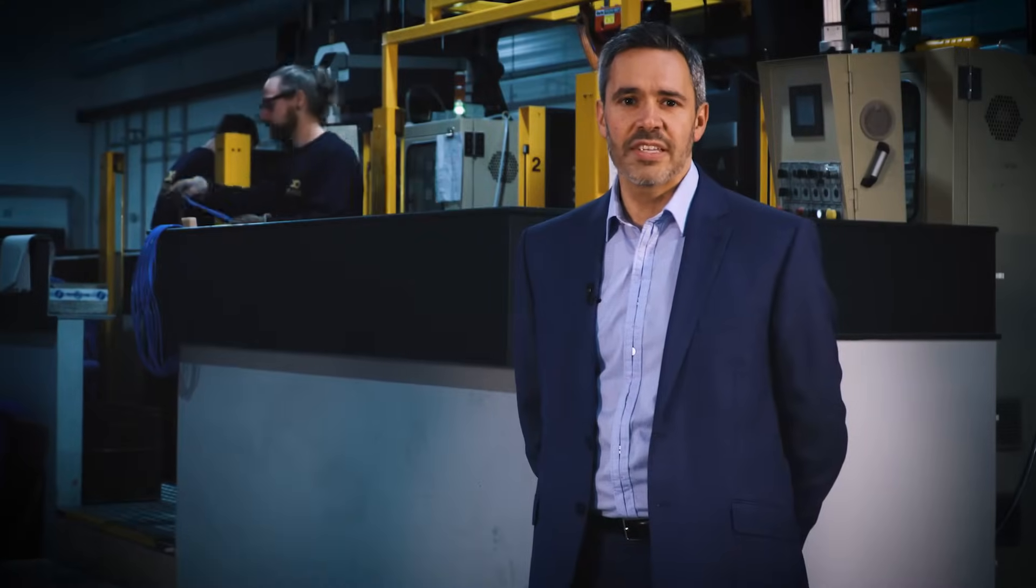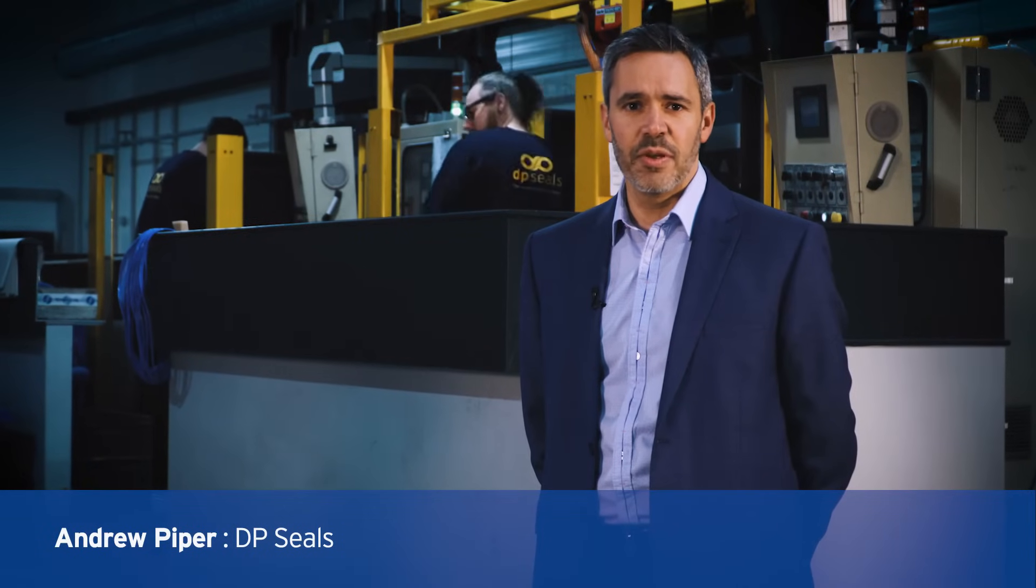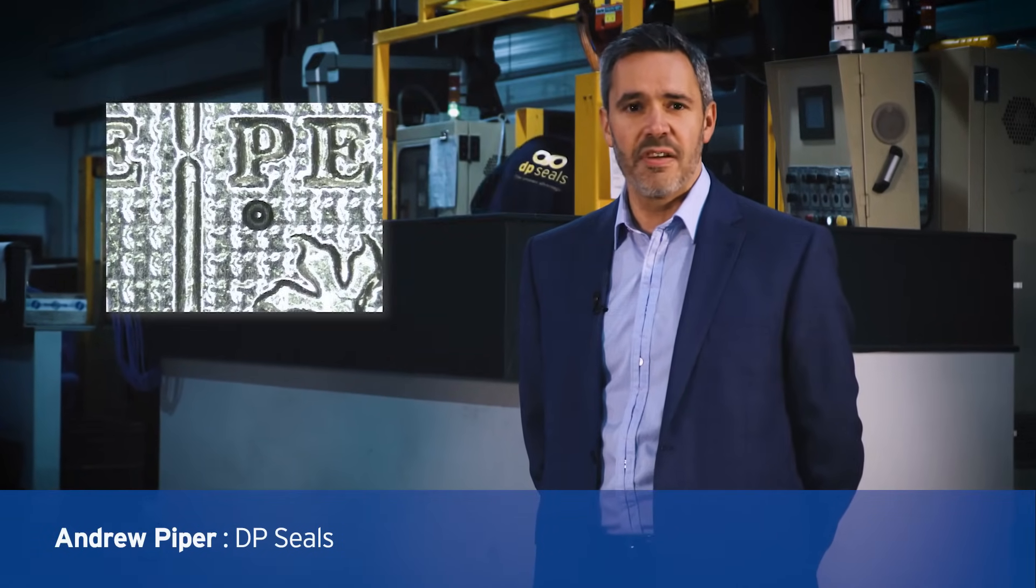Ultra-small, flash-free mouldings are nothing new to DP seals. As far back as 1979, we produced this miniature O-ring with an internal diameter of just 0.05mm.